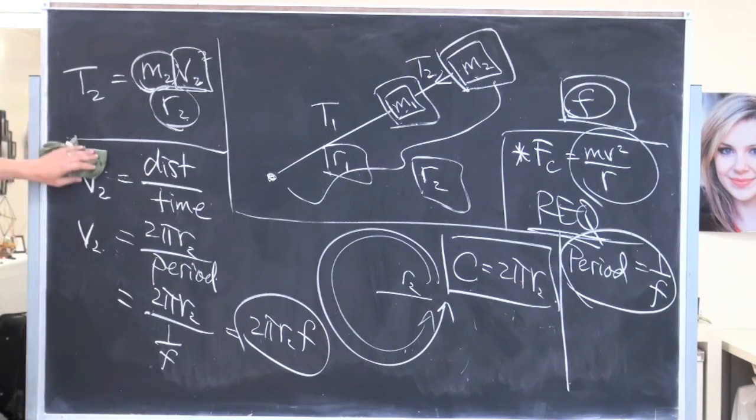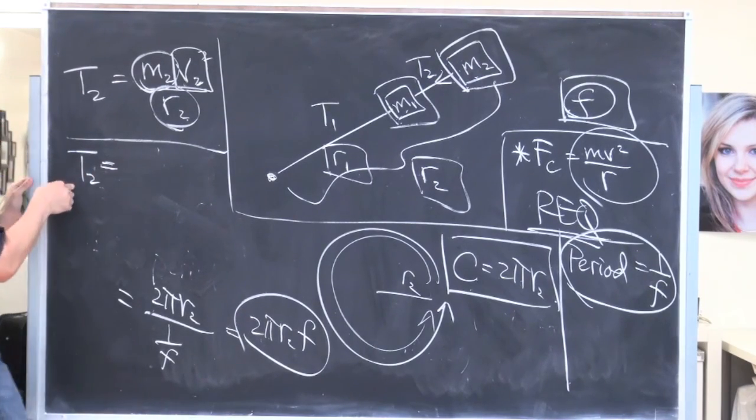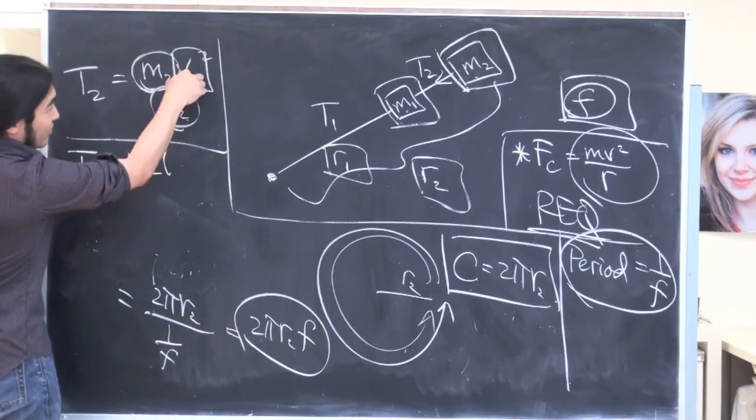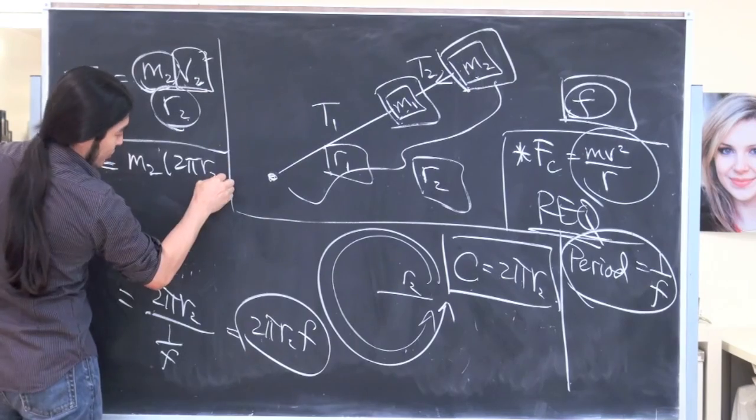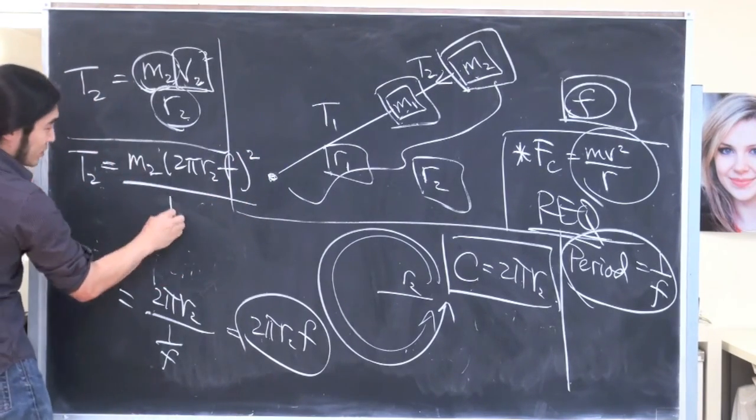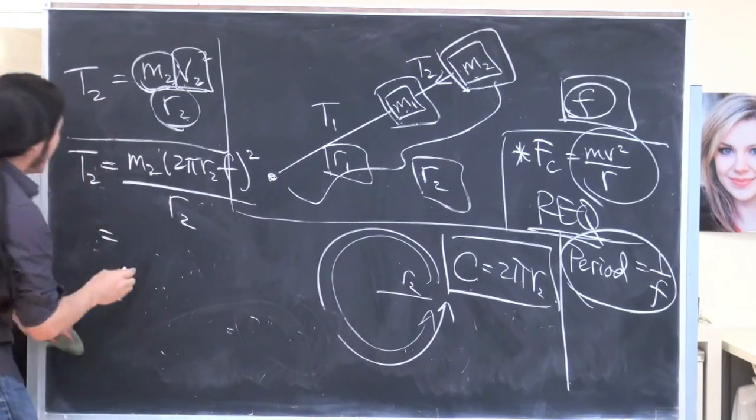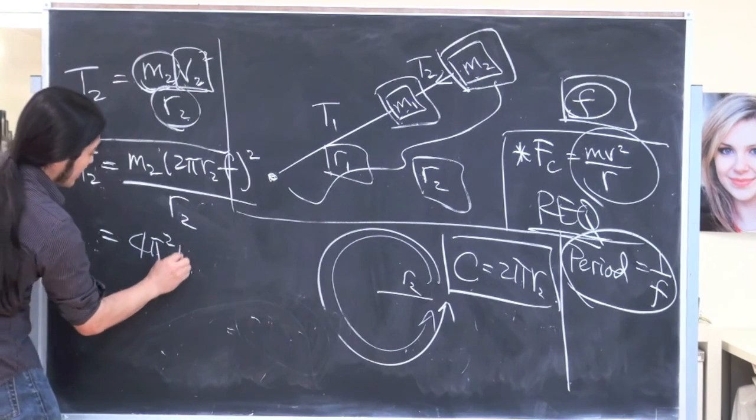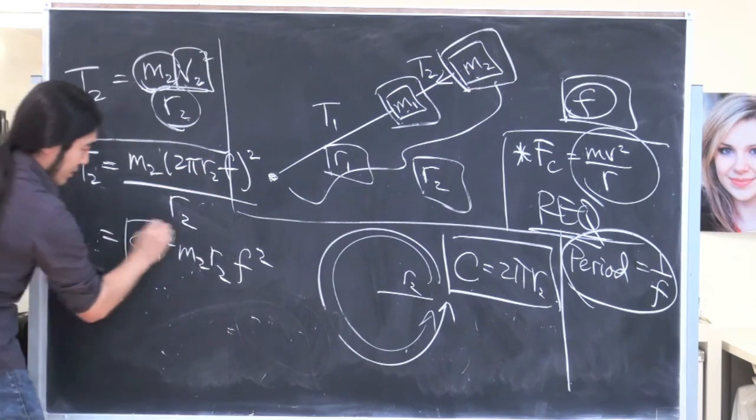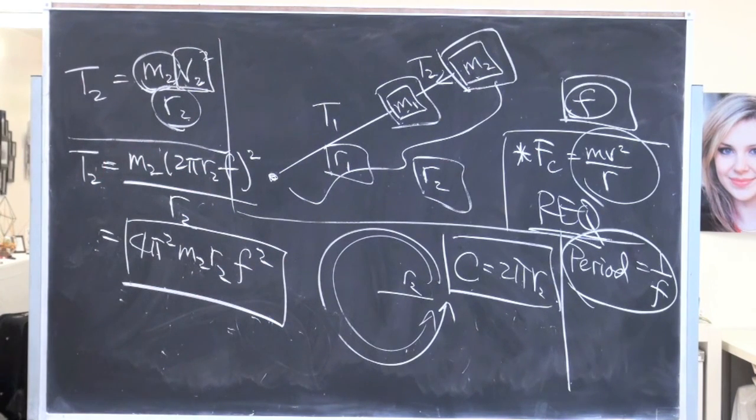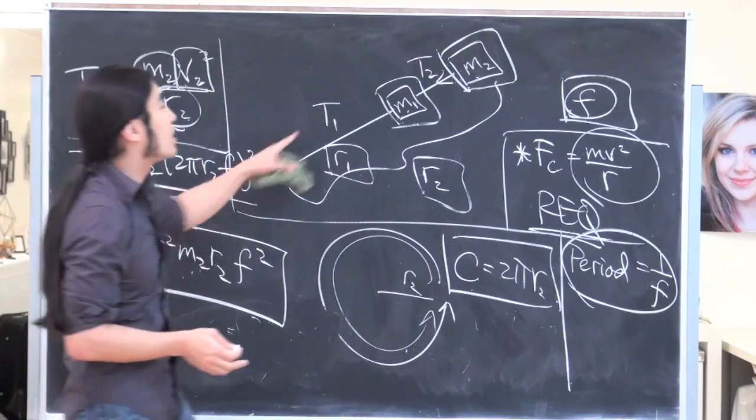Then to finish this guy, all we're going to do is just plug in. So now, the tension in that guy has got to be mass 2, velocity 2 squared, but this is velocity 2. So 2πr2 frequency squared over the radius, which is r2. Do a little bit of arithmetic and clean this up. Then I think this is going to be 4π² m2 r2 frequency squared, where I had this guy cancel out one of you guys over here. So, not too bad. So if you're comfortable with that, we're going to catalog this. I'm going to use it to solve the second part.